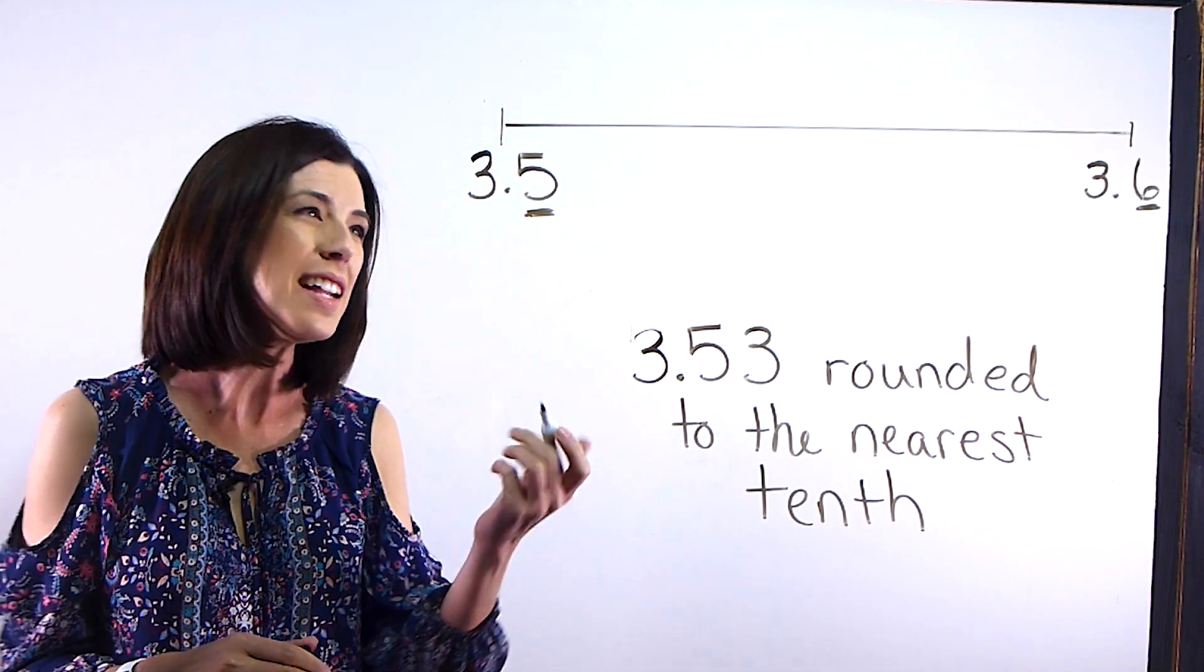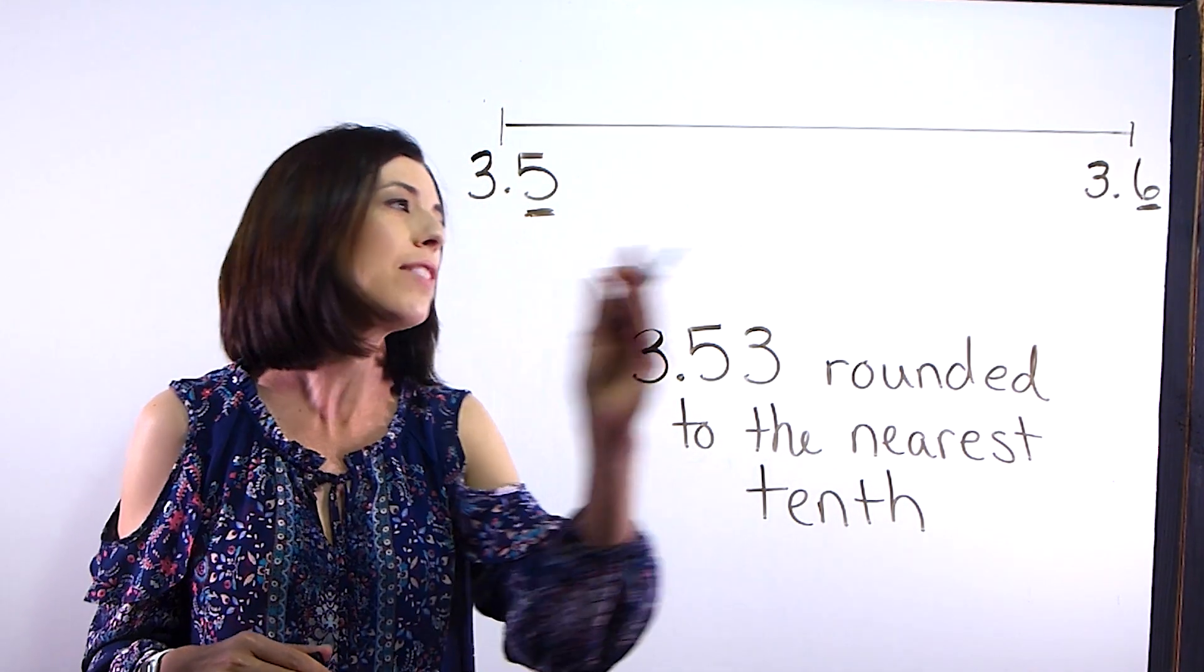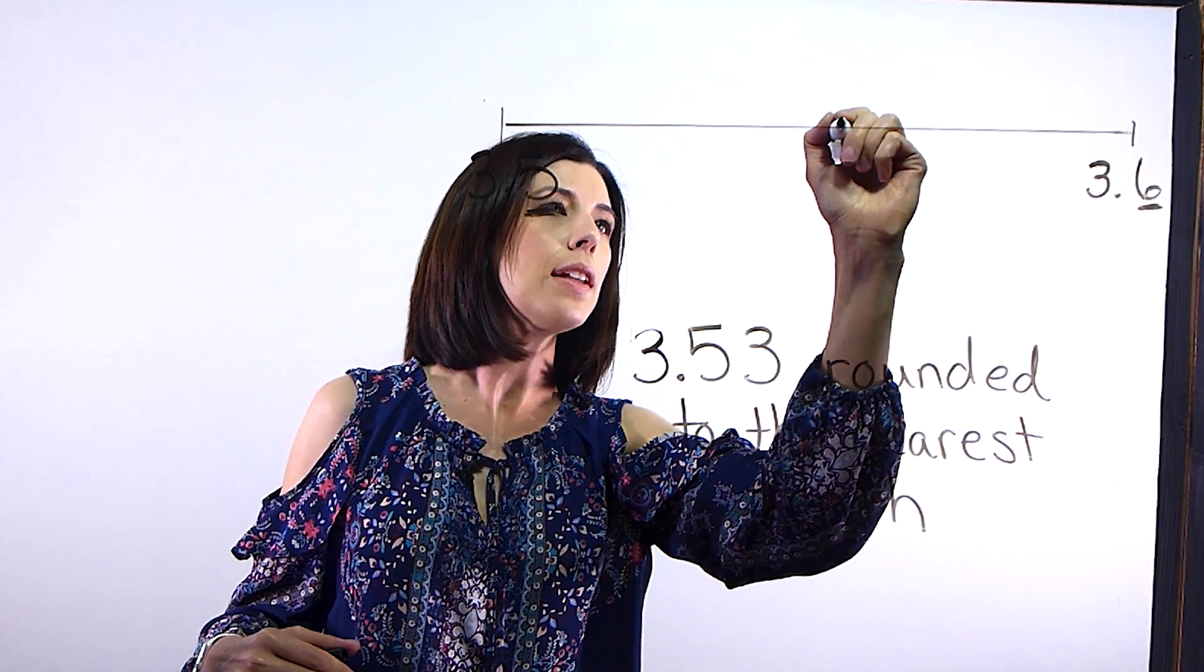Then you need to think about what's in the middle. So between 3 and 5 tenths and 3 and 6 tenths, what is in the middle?